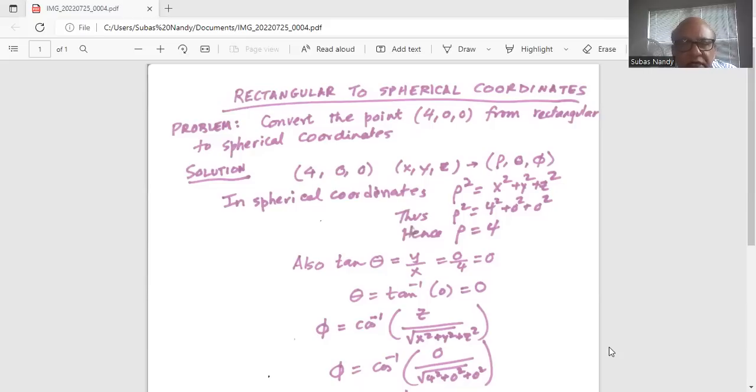Now tangent of theta is equal to y over x, which is 0 by 4, and it is equal to 0. So theta is equal to tangent inverse or arctan 0, which is 0. So theta is 0 degrees.